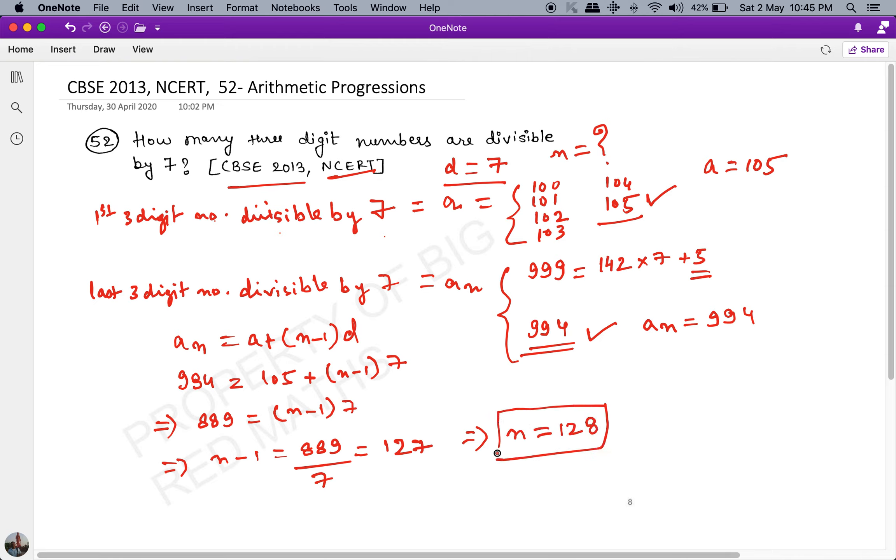This is our answer: there are 128 three-digit numbers that are divisible by 7. 128 is the answer.